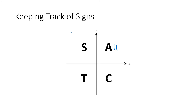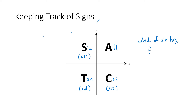A quick way to keep track of these signs is the mnemonic ASTC. The A stands for All — all trig functions are positive in quadrant one. In quadrant two, sine and its reciprocal cosecant are positive and everything else is negative. In quadrant three, tangent and cotangent are positive while all other four trig functions are negative. In quadrant four, cosine and its reciprocal secant are positive and everything else is negative.